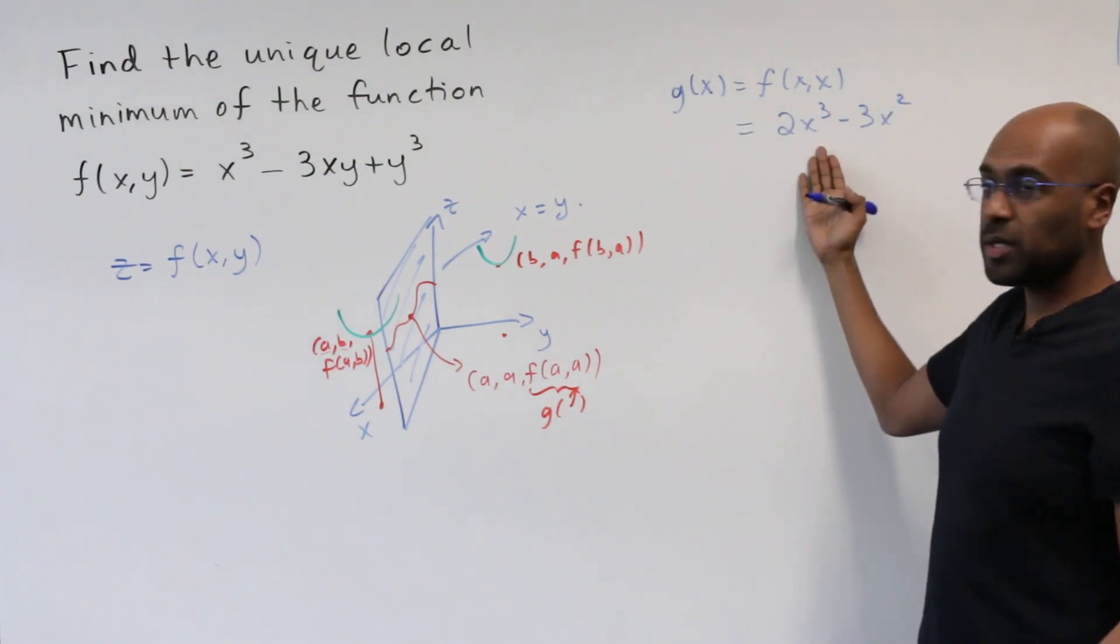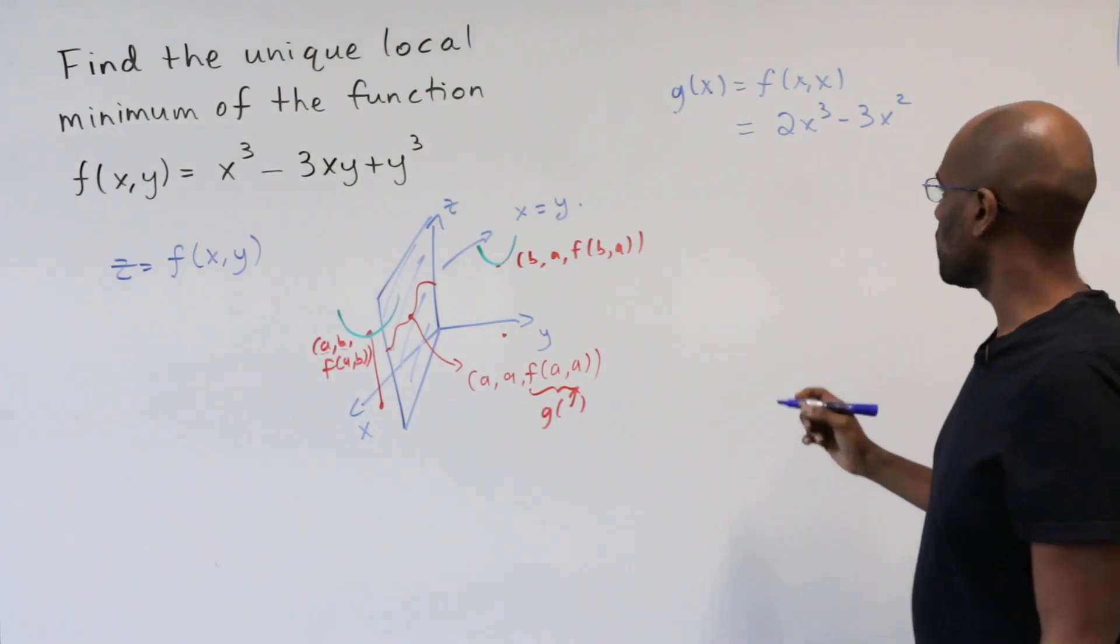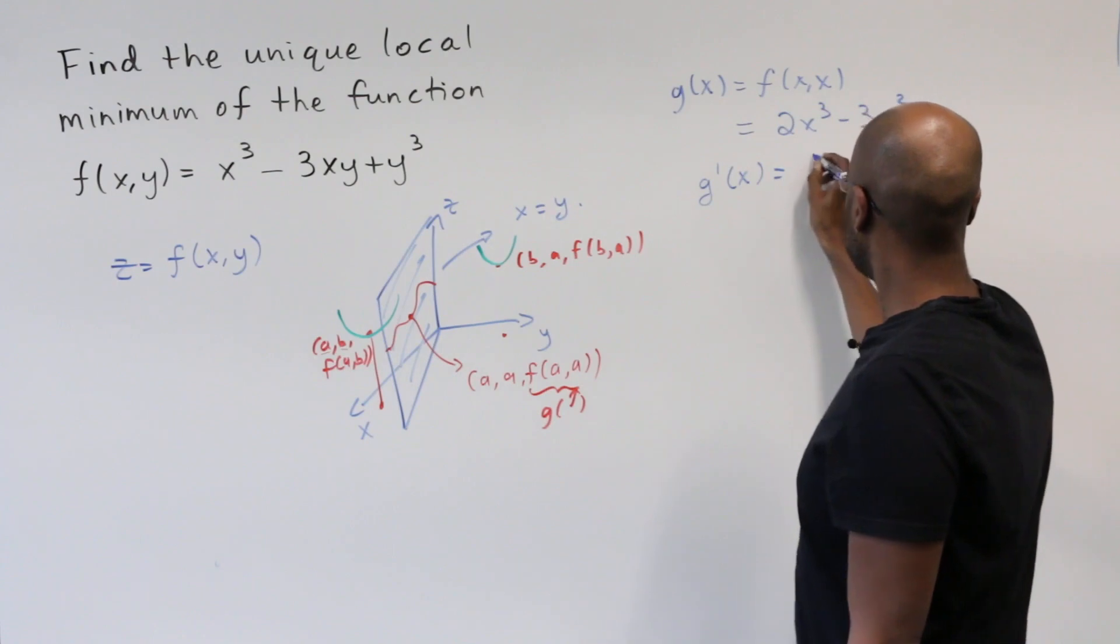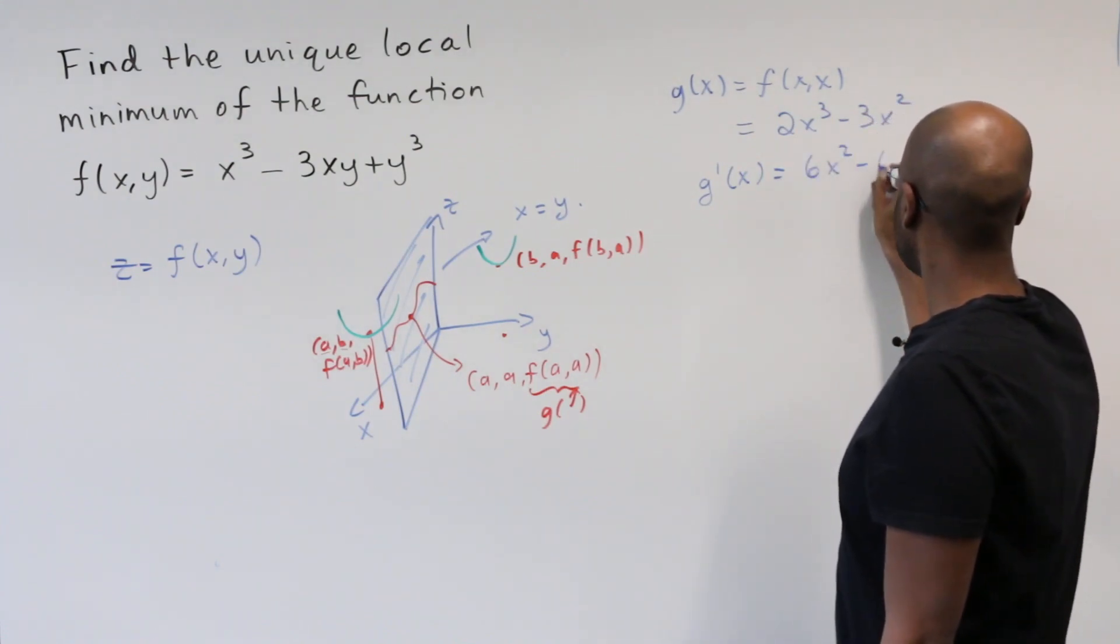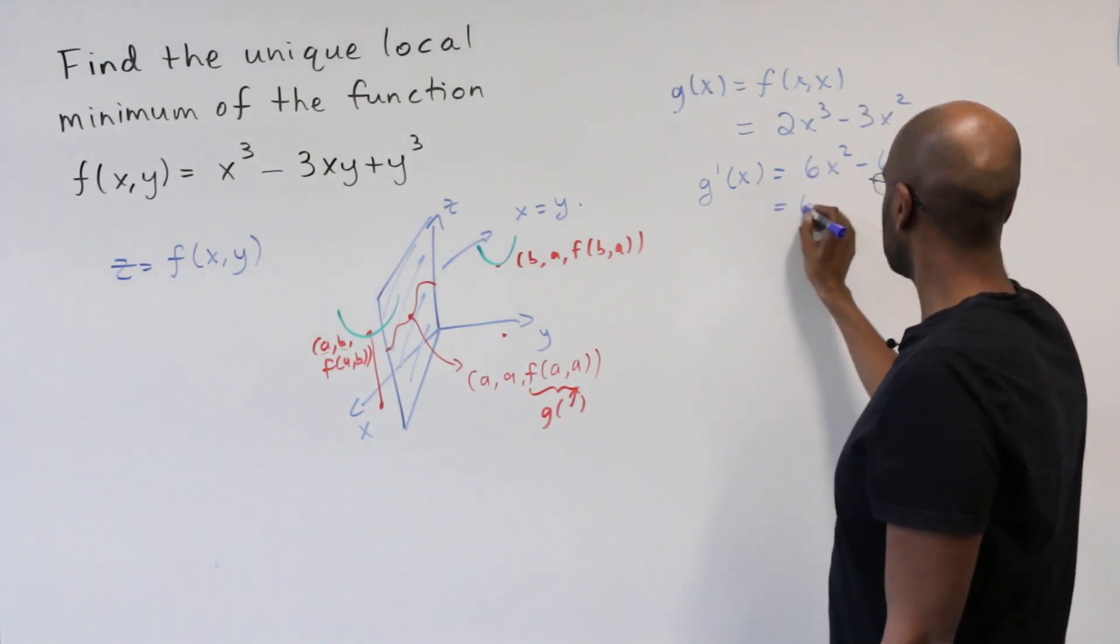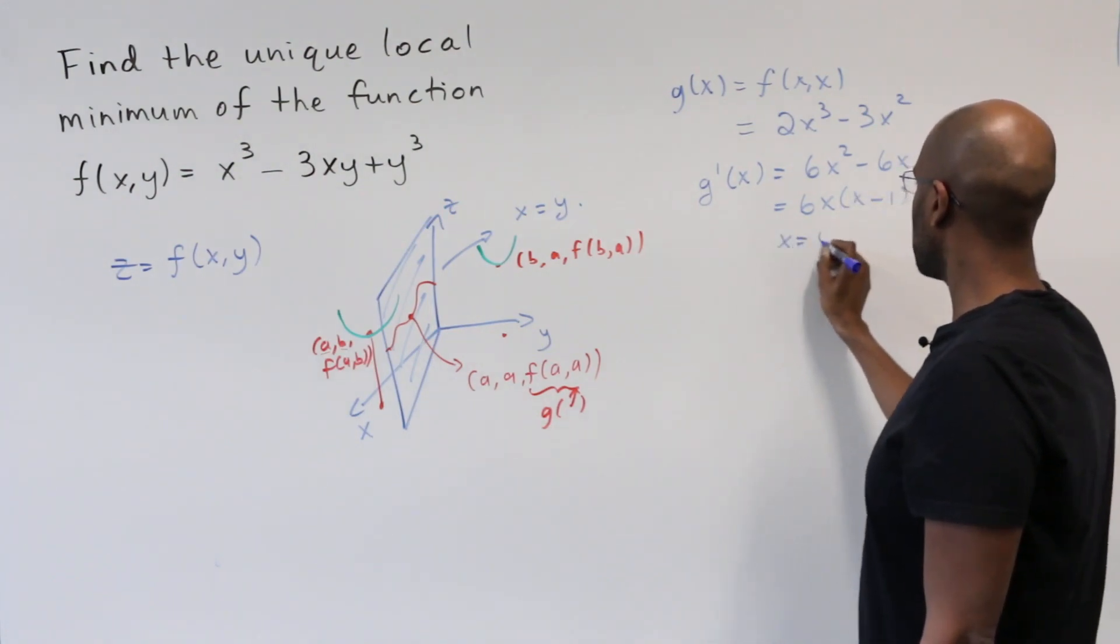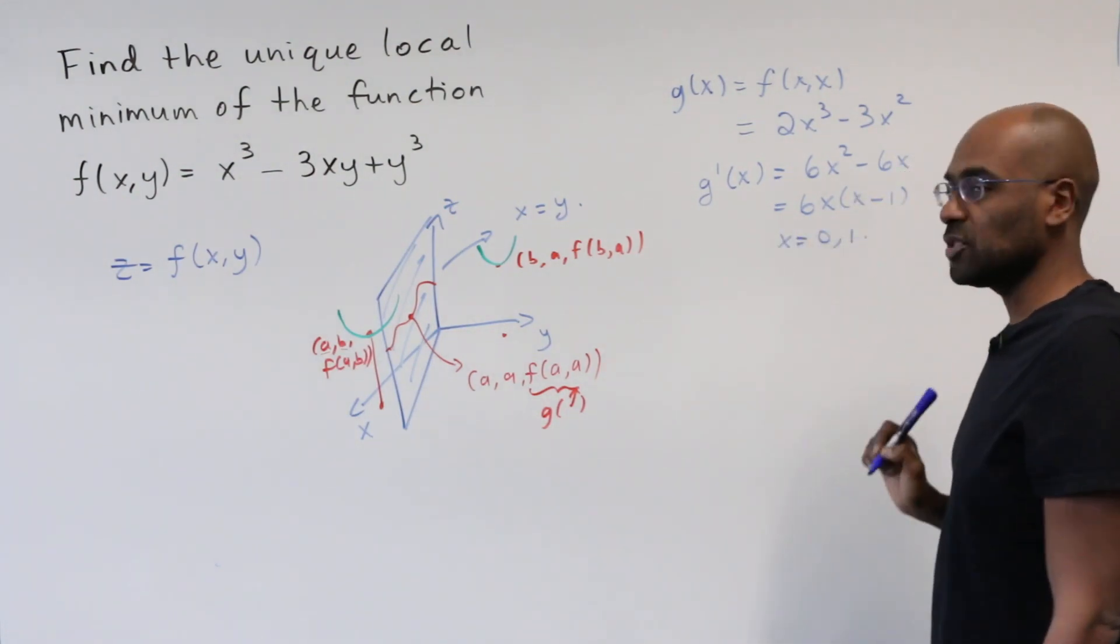Alright so let's do single variable calculus to figure out local minima for this function g. g prime of x is 6 x squared minus 6 x, which factors into 6 times x times x minus 1. So our critical values happen at x equals 0 and x equals 1.